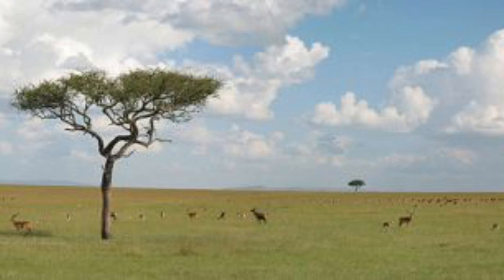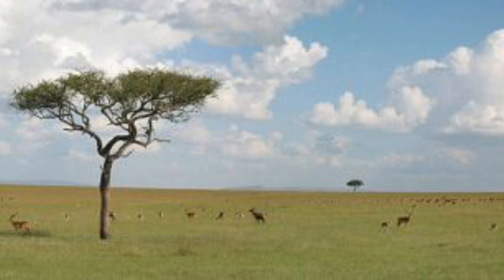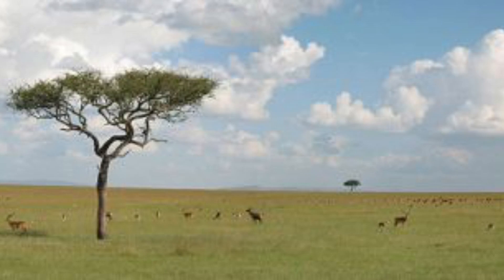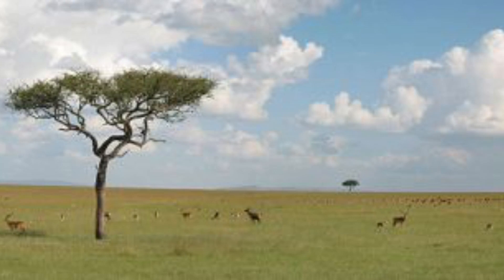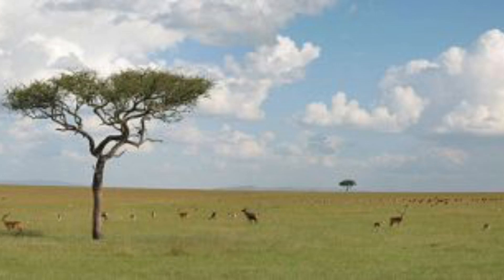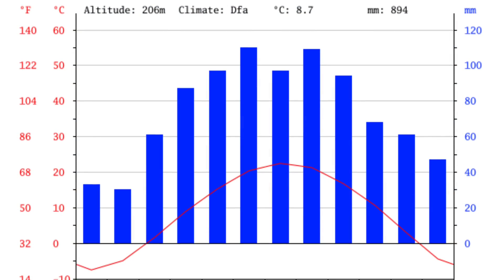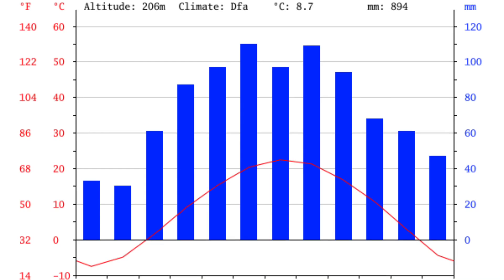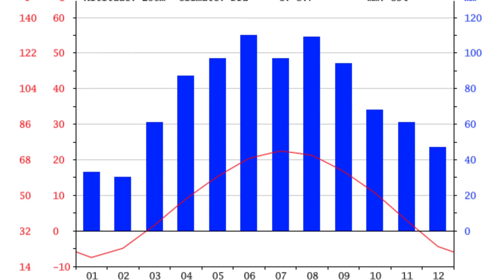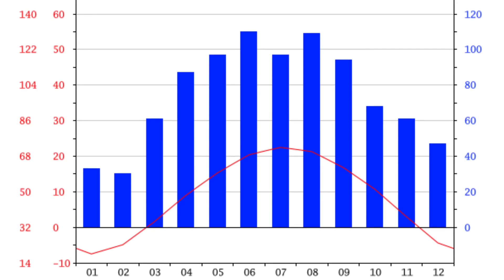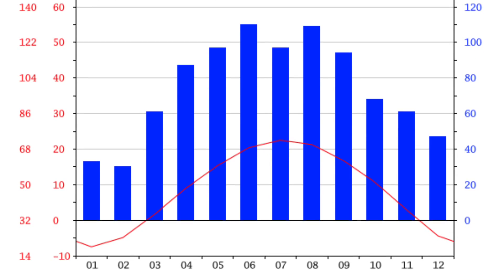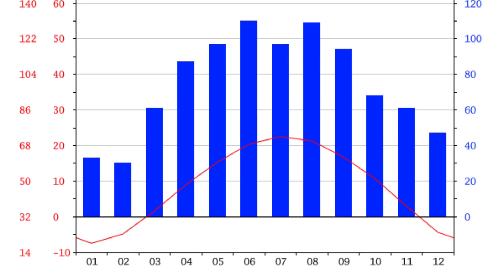A savanna is a rolling grassland scattered with shrubs and isolated trees. It can be found between a tropical rainforest and a desert biome. Not enough rainfall occurs on savannas to support forests. Savannas are also known as tropical grasslands. Average precipitation is 59 inches of rain per year, most of which comes during the wet season. The temperature range is 68 to 86 degrees Fahrenheit, with an average of 78 degrees — a very temperate environment suitable for wildlife.